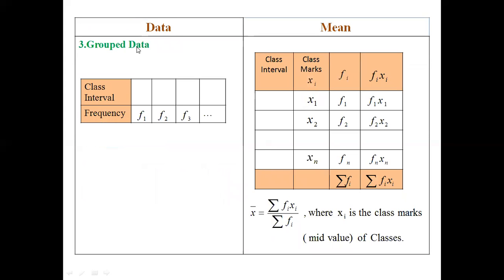For grouped data, we prepare a table with the first column for the class interval, the second column for the class marks xᵢ — which is the mid-value of the class interval — the third column for the given frequency fᵢ, and the last column for fᵢ × xᵢ. Take the sums Σfᵢ and Σfᵢxᵢ. So the mean x̄ = Σfᵢxᵢ / Σfᵢ, where xᵢ is the class mark, that is the mid-value of the classes.